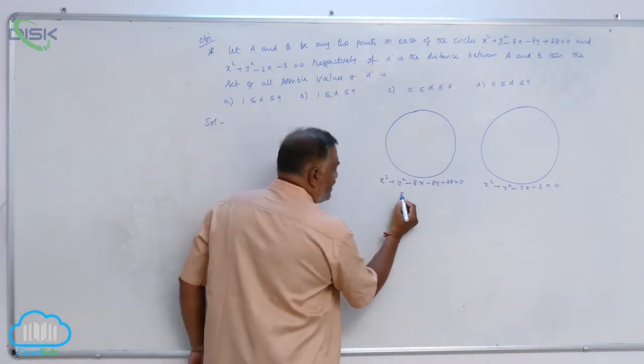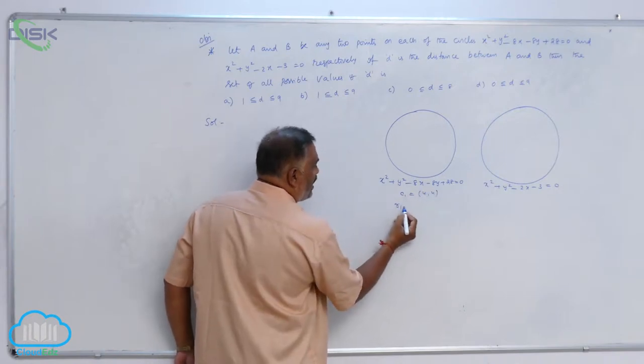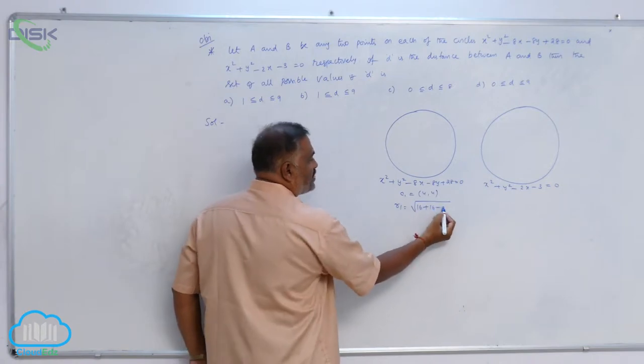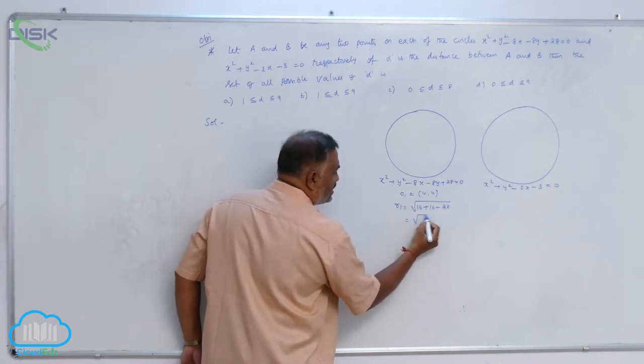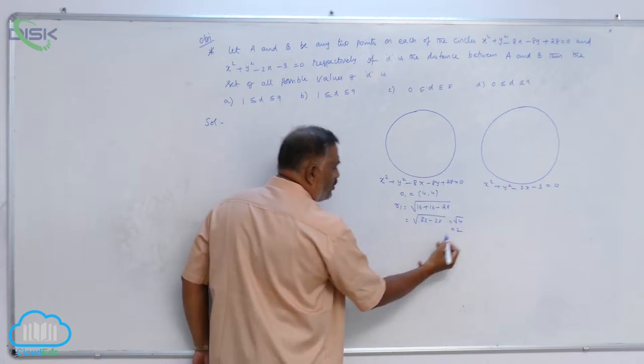We will write the center here. C₁ = (4, 4). R₁ = √(16 + 16 - 28) = √(32 - 28) = √4 = 2.